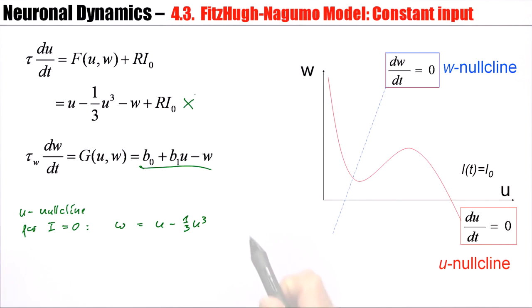Now, for a positive i zero, I have w equals u minus one-third u-cubed plus R times i zero.